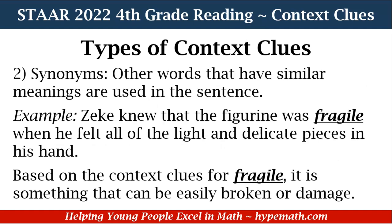Another type of context clue is synonyms — other words that have similar meanings used in a sentence. Our sample sentence says: Zeke knew that the figurine was fragile when he felt all of the light and delicate pieces in his hand. Based on the context clues for fragile, we know it is something that can be easily broken or damaged. How do we know that? Because it said Zeke felt all of the light and delicate pieces in his hand.